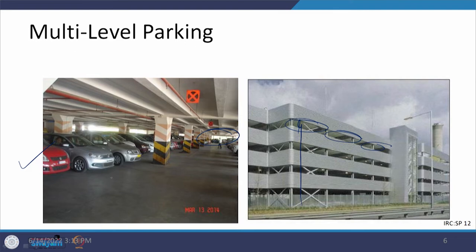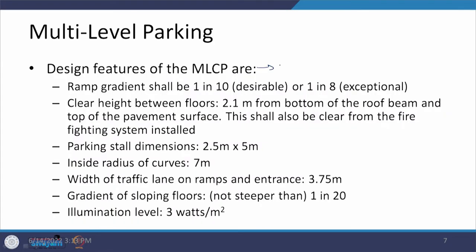When we have this type of big facility, we should have an information system. This system should tell the parker at the entry of the area itself — for example, directing them to floor 1, parking bay area 275, which is vacant — so people move directly to designated locations rather than wasting time searching for spaces. The design features of MLCP are also valid for underground parking facilities, as discussed previously, so we will talk about them together.